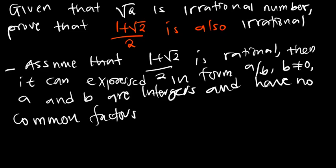A rational number is a number that can be expressed in the form of A over B, where B should not equal 0. A and B are integers and have got no common factors. A very good example of a rational number is 2 over 3 — there is no number that can go into both 2 and 3 except 1. So A is 2, B is 3, B is not equal to 0, and negative 2 over 3 is also a rational number.